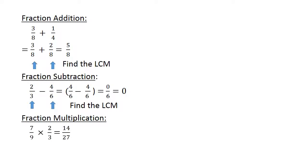Fraction multiplication: 7 over 9 times 2 over 3. 7 times 2 equals 14, and 9 times 3 equals 27.